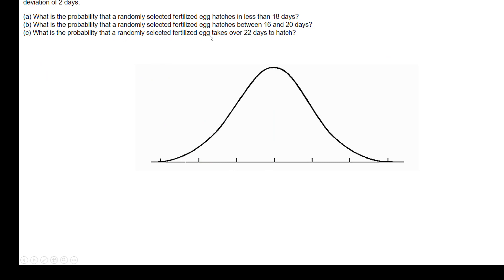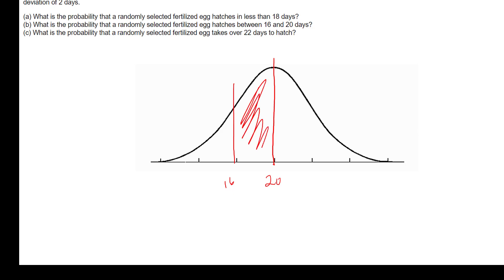The second question asks: what is the probability that a randomly selected fertilized egg hatches between 16 and 20 days? Drawing the mean at 20, we want the area between 16 and 20. When doing a 'between' problem, we look up both areas and subtract.